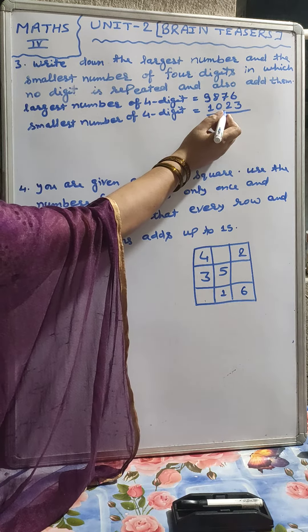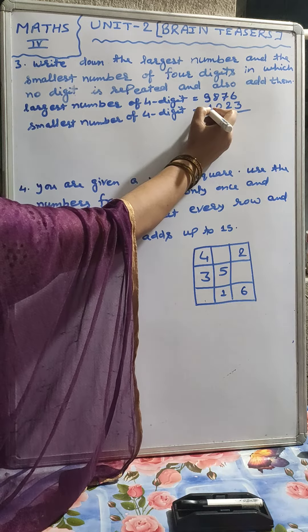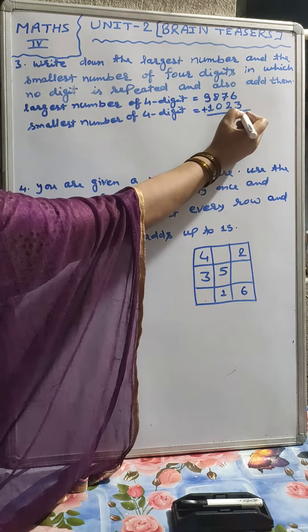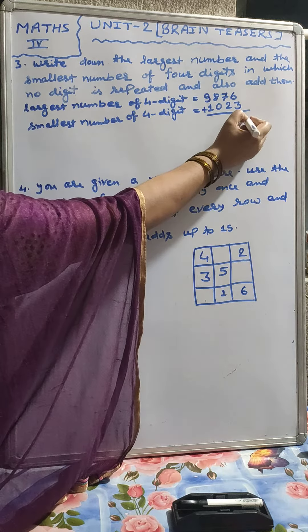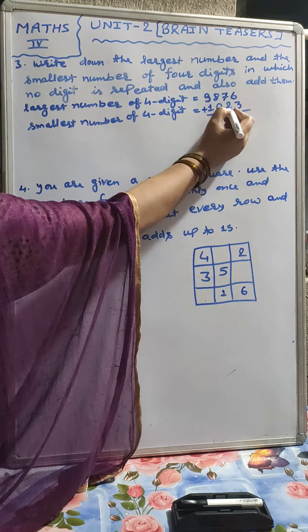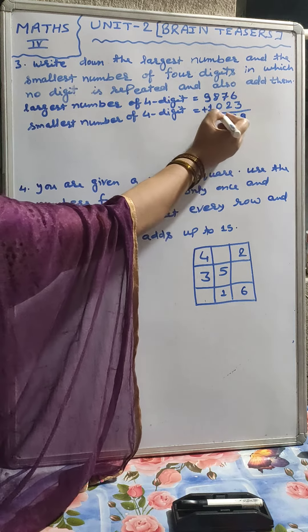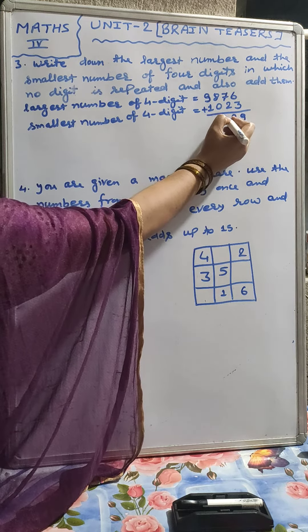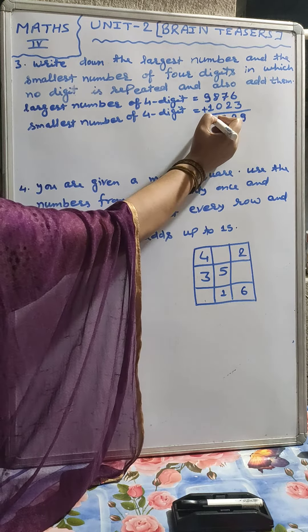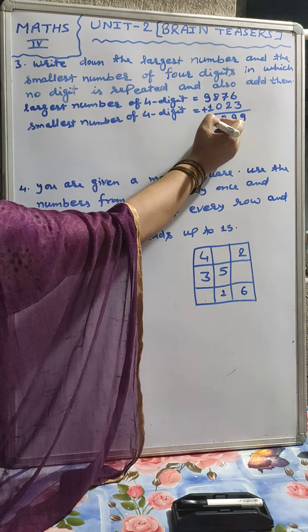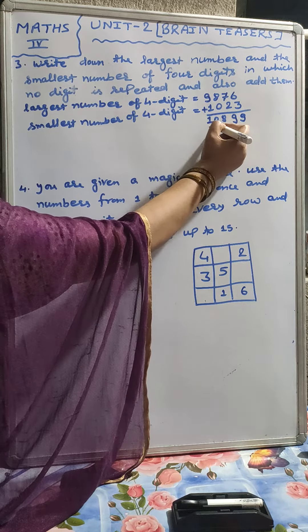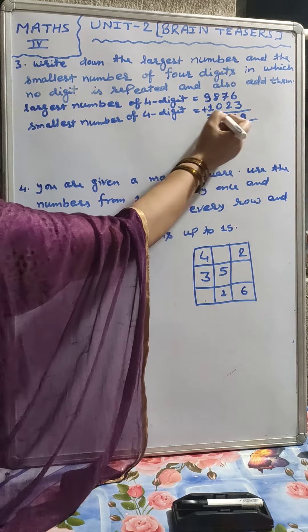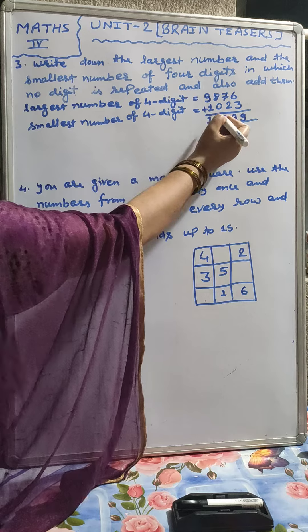Now we have to add them. Put here the plus symbol. 6 plus 3 is 9. 7 plus 2 is 9. 8 plus 0 is 8. And 9 plus 1 is 10. So our answer is 10,899.